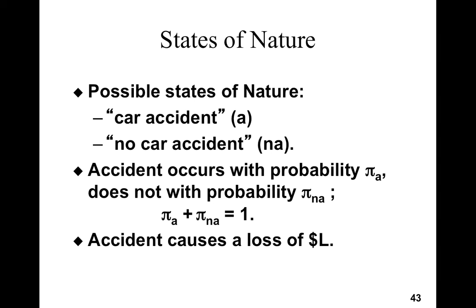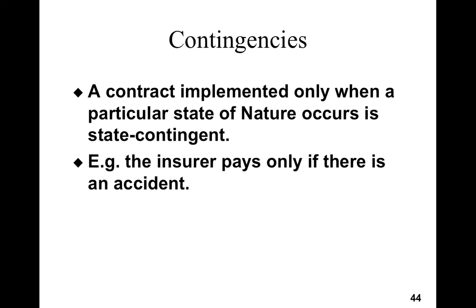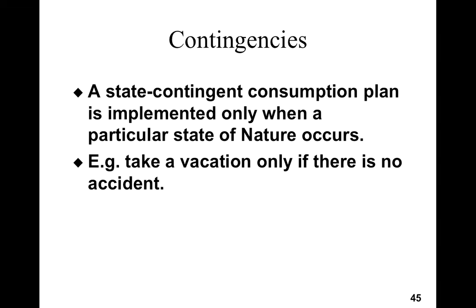Let's figure out how we can represent affordability of a state contingent consumption plan given these two states of nature. Let's say that the accident occurs with probability pi_a and it does not with probability pi_na. They are exhaustive events, so pi_a plus pi_na equals one. Let's say that the loss caused by the accident is dollar L. An insurance contract is basically a contract that is implemented only when a particular state of nature occurs, and therefore is state contingent — the insurer pays only if there is an accident.